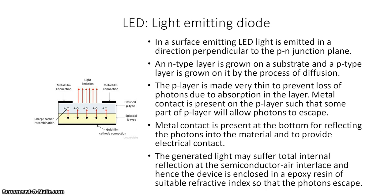In a surface emitting LED, light is emitted in a direction perpendicular to the pn junction. An n-type layer is grown on a substrate and a p-type layer is grown on it by the process of diffusion. In the n-region the entire region is covered with a metallic coating, whereas in the p-region there is a gap so that the light can escape. Since total internal reflection may prevent the light from escaping, the LED is enclosed in an epoxy of suitable refractive index so that the photons escape.